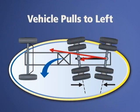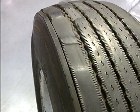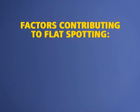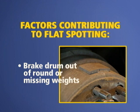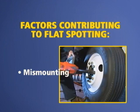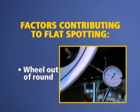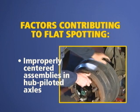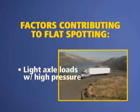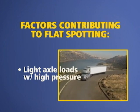If the opposite wear patterns exist on the steer tires, then the drive axles are closer together on the left side. Flat spotting on steer tires is generally caused by an imbalance situation. Some factors contributing to this condition are the tire and wheel assembly being out of balance, the brake drum being out of round or missing balance weights, the tire incorrectly mounted on the wheel, a wheel out of round, bad or missing shocks, improperly centered assemblies on hub piloted axles, or light axle loads with high inflation pressures.